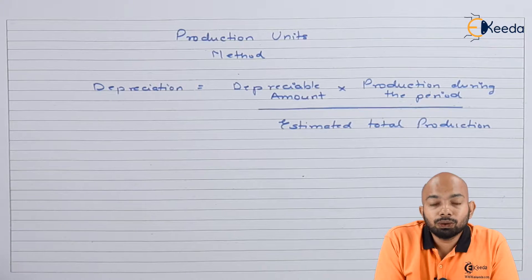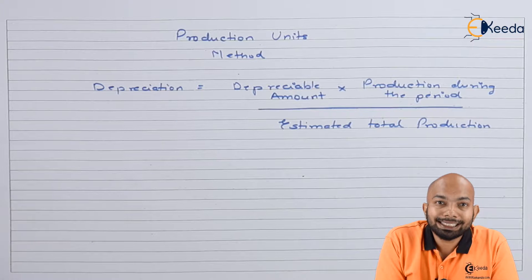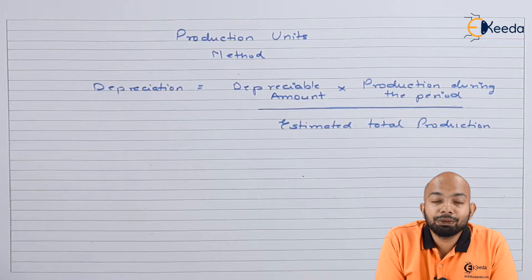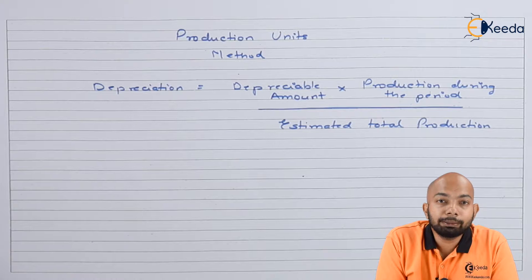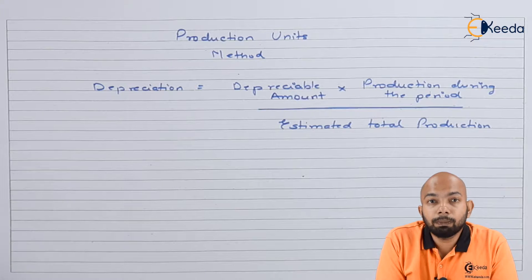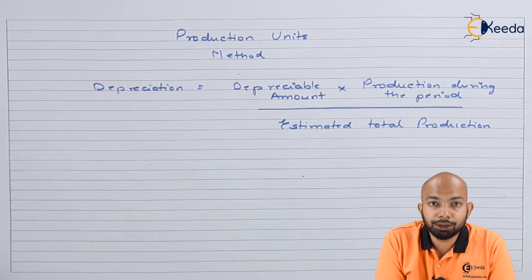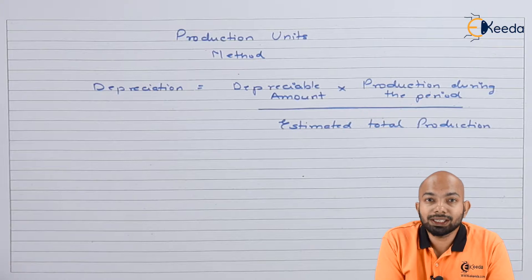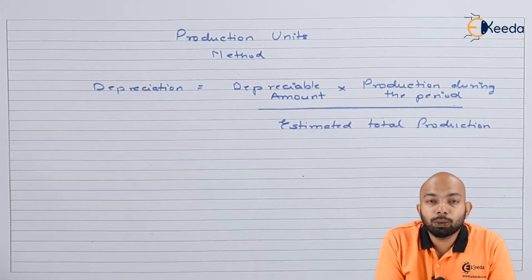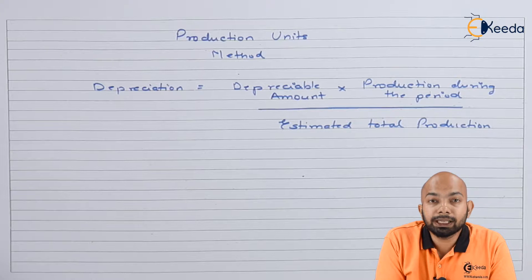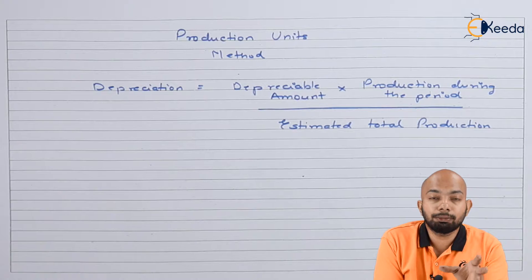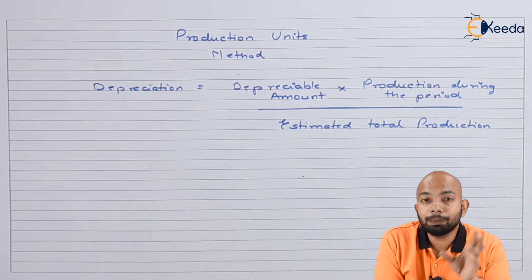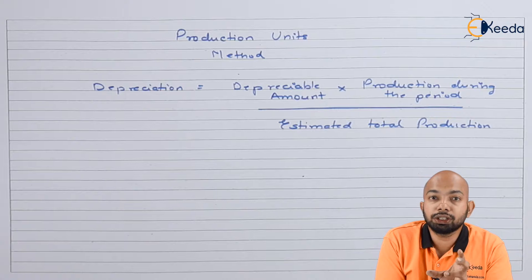As we know, the production unit method basically refers to the similarity between the machine hour rate method and this method, whereby the machine hours are replaced by the production units — that is, how many units are produced during a certain time is the factor considered while calculating depreciation. So we have a similar concept; it's only that the hours have been replaced by production units.